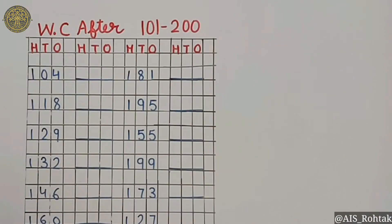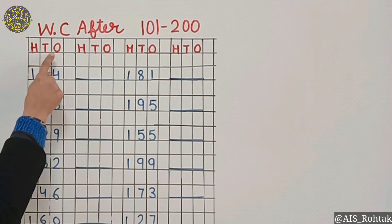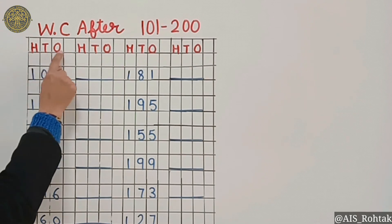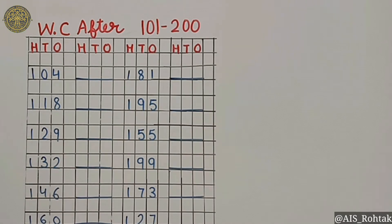First of all, we will write 100, 10, and 1 on the top of the line. Now students, think about the number line that we have learnt in various videos. But there we have practiced only for 1 to 10. Now we have to think about more numbers, up to 200.